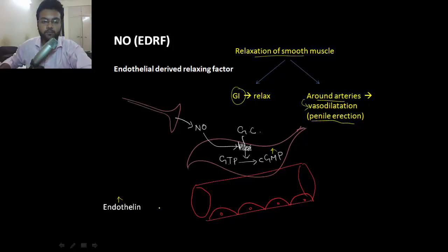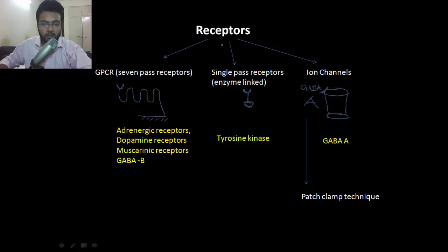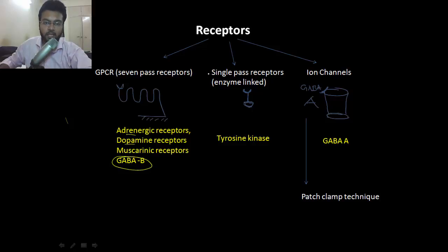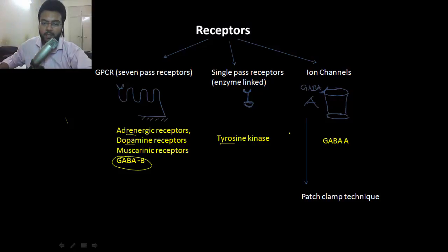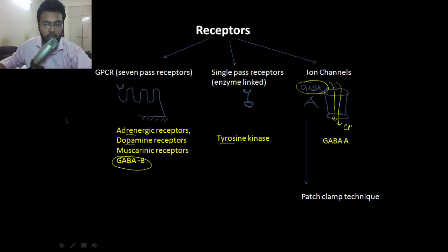Now let's talk briefly about receptors. They are divided into three types. First, G-protein coupled receptors, which are seven-pass receptors also called serpentine receptors, which pass seven times within the cell membrane — examples include adrenergic receptor, dopamine, or GABA-B. Second, single-pass receptors such as tyrosine kinase. Third, ligand-gated ion channels — for example, GABA binds to GABA-A, resulting in influx of chloride, which causes inhibition of the neuron.